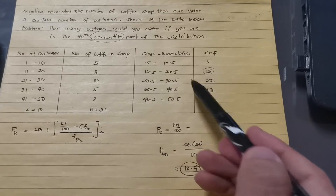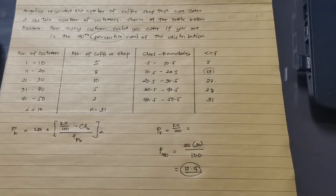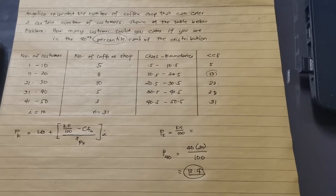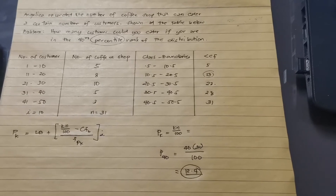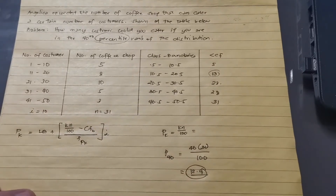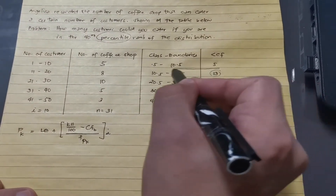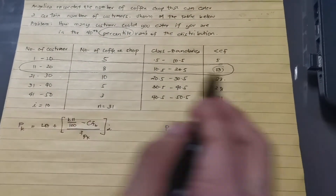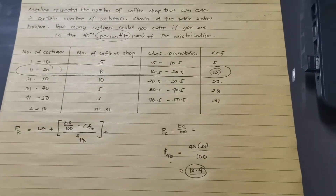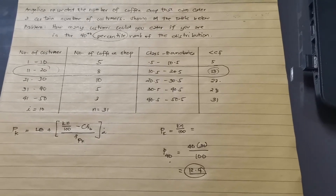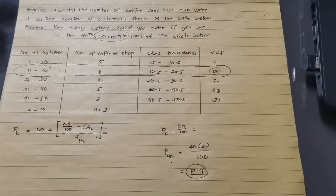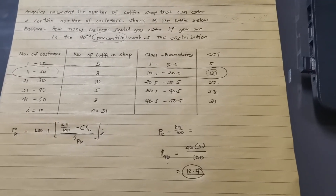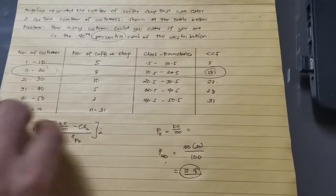If the cumulative frequency value you find is exactly 12, we cannot use that interval because 12 is not yet 12.4. We move to the next cumulative frequency value after 12. We highlight that row, and we find that P sub 40 is located in the interval 11 to 20 — meaning you can cater between 11 to 20 customers if you fall in the 40th percentile.